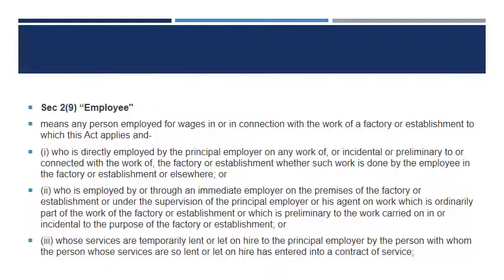Next — Employees. Note that definitions like 'employee' or 'wages' change meaning depending on the Act. In the Compensation Act, the employee is the person to whom compensation is given; in the Factories Act, it is the person working in the factory. So according to each section, the meaning changes. Under Section 2 subsection 9 of the ESI Act, 'employee' means any person employed for wages in connection with the work of a factory or establishment to which the Act applies.